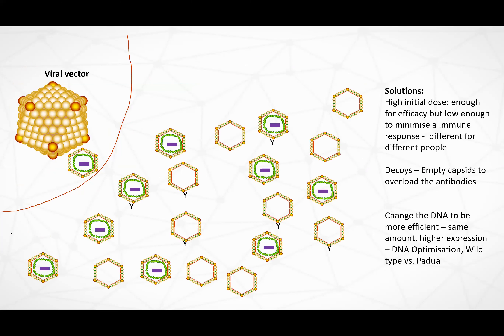So now we have this viral vector and we've chosen the one we want, we've put the DNA inside, we have the promoter, and no specific antibodies. What we need to do is inject a high enough initial dose for efficacy, but low enough to minimize the immune response — and that's very different for different people from what we've seen in clinical trials. We've also seen the use of empty capsids as decoys to overload the antibodies, hoping they attach to the decoys and enough vector gets through to the cell to create a response.